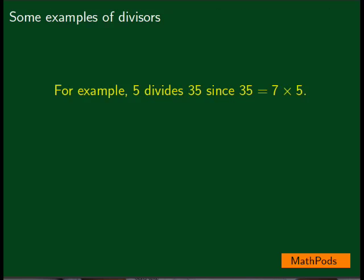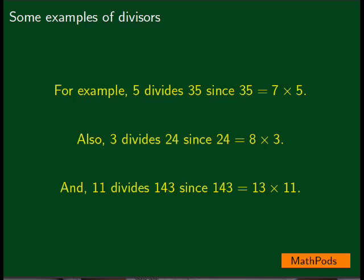Some examples of divisors. For example, 5 divides 35, since 35 is equal to 7 times 5. Also, 3 divides 24, since 24 is 8 times 3. And 11 divides 143, since 143 is 13 times 11.